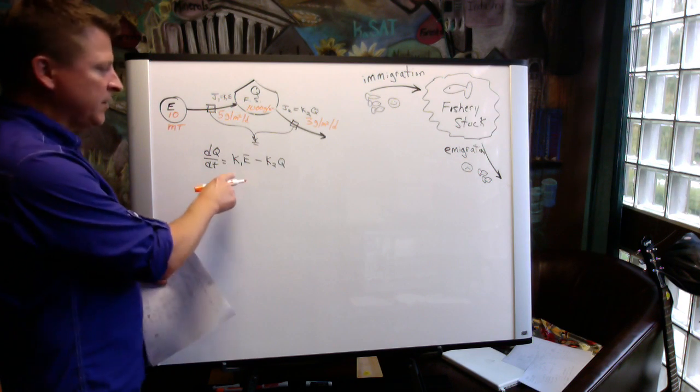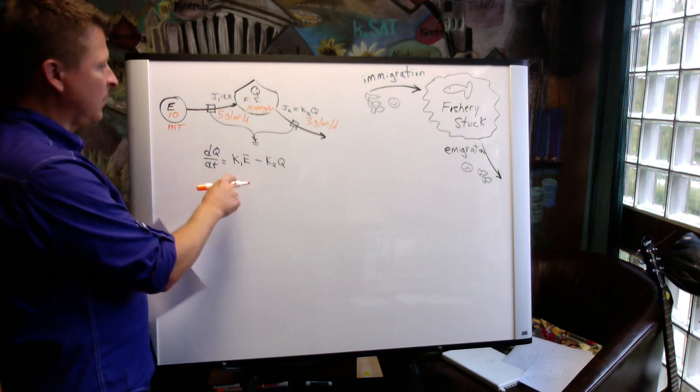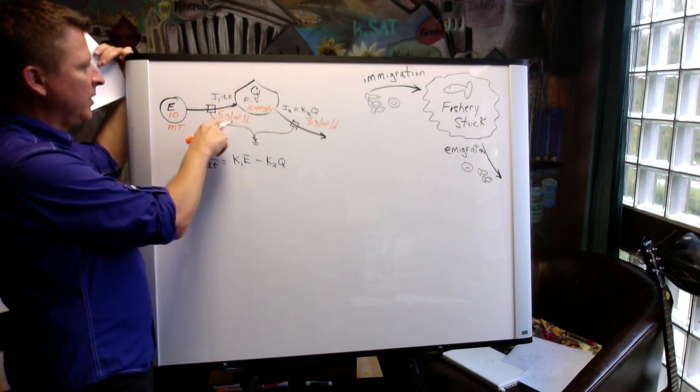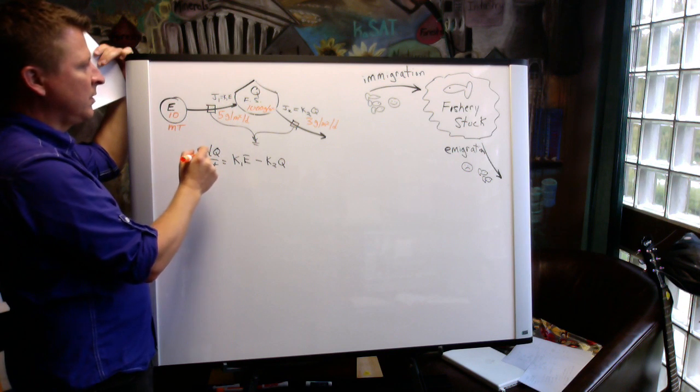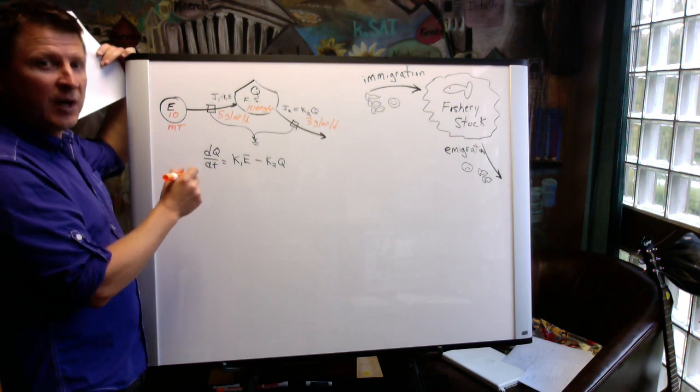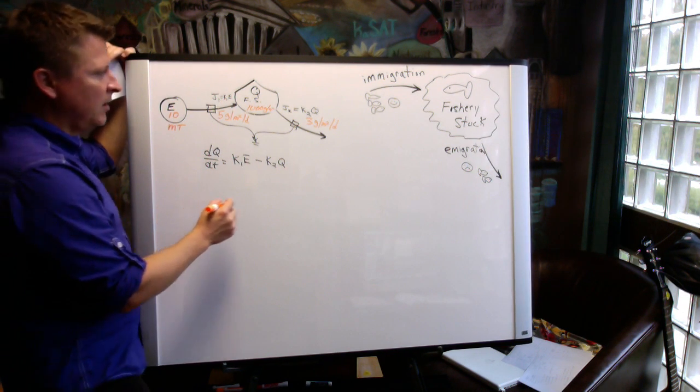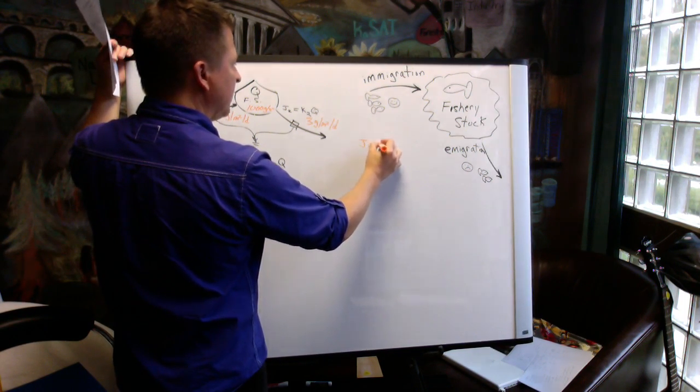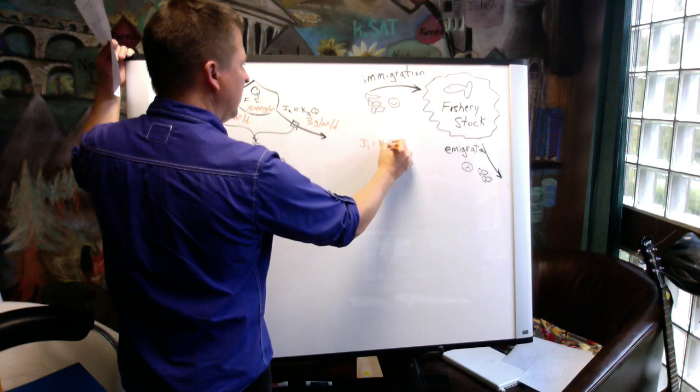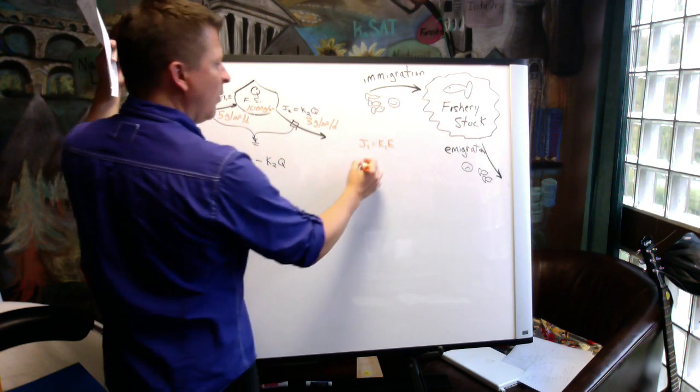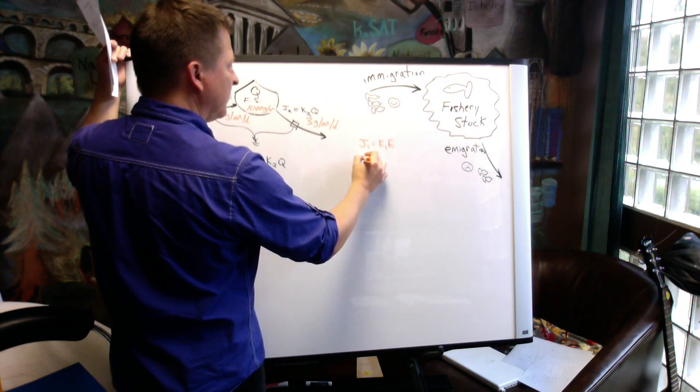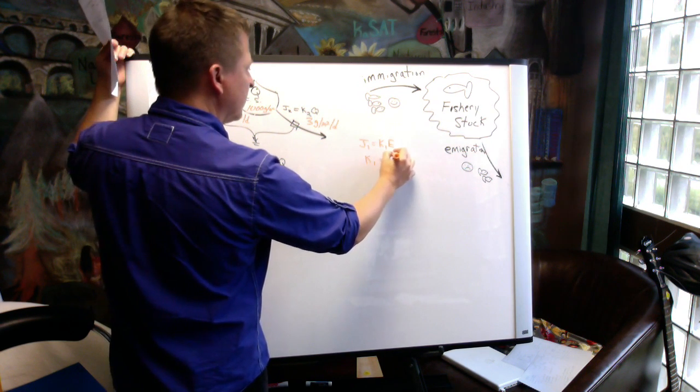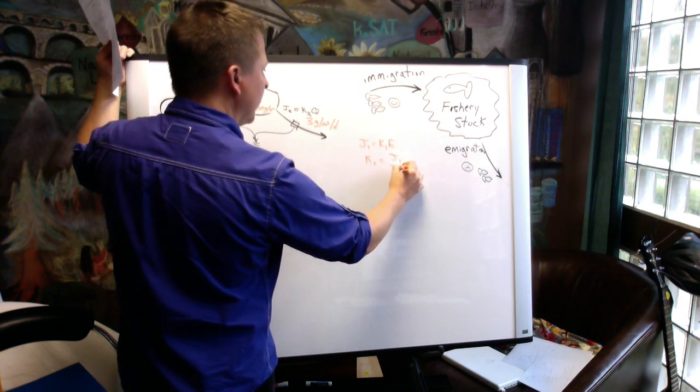So let's determine what this K1 will be here. So we can see that this K1 is the inflow, and we know that J1 equals K1 E equals 5 grams per square meter per day. So we can write J1 equals K1 E, or 5, or we're going to solve for K1 equals J1 divided by E.